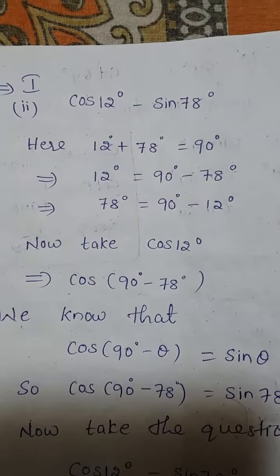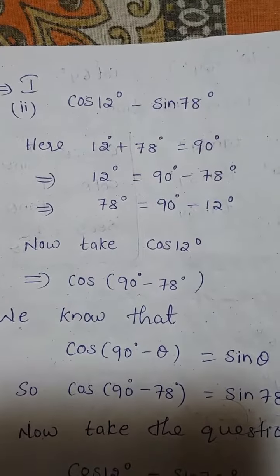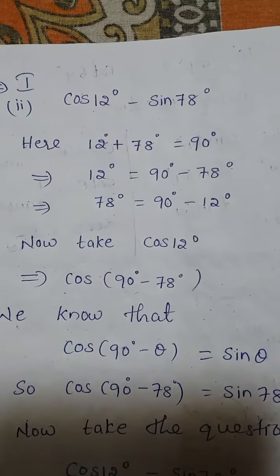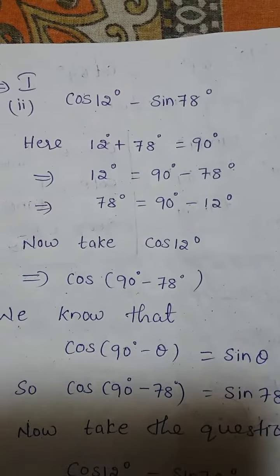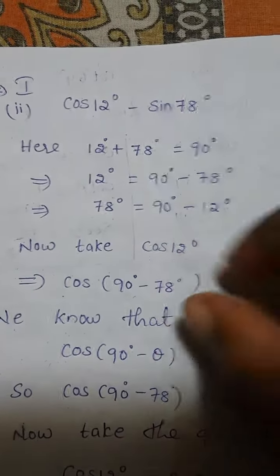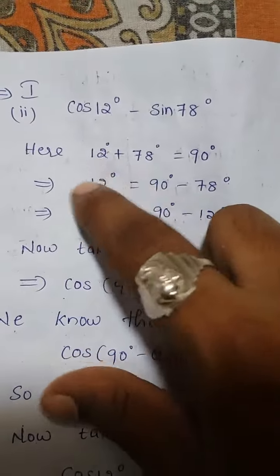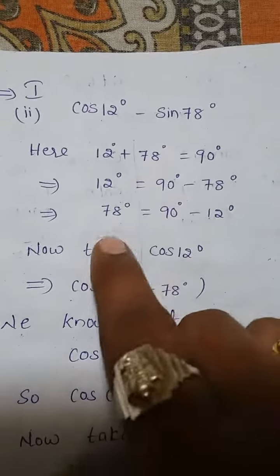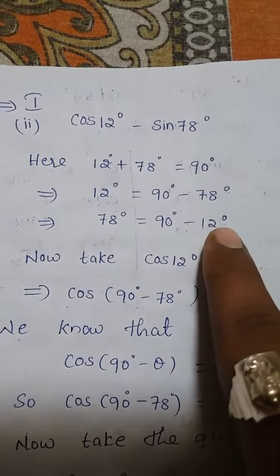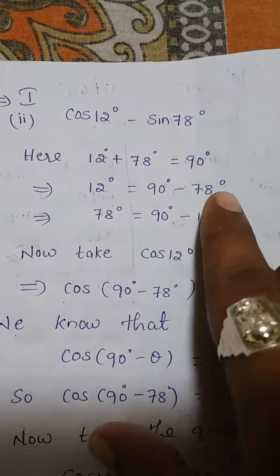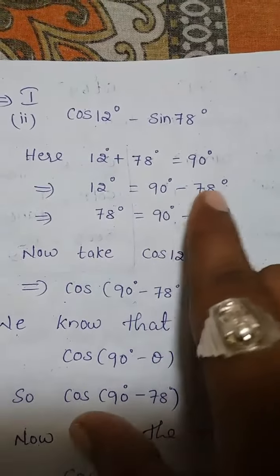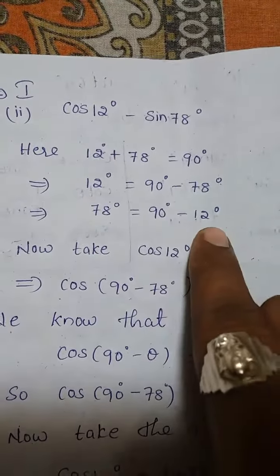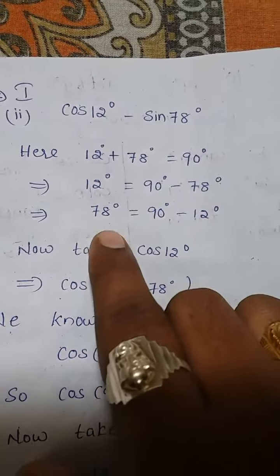Therefore, the given two angles are complementary angles. If the sum of any two angles is 90 degrees, the two angles are called complementary angles. Here, 12 degrees is nothing but 90 minus 78 degrees, and 78 degrees is nothing but 90 minus 12 degrees. The difference of 90 and 78 gives 12 degrees, and the difference of 90 and 12 gives 78 degrees.